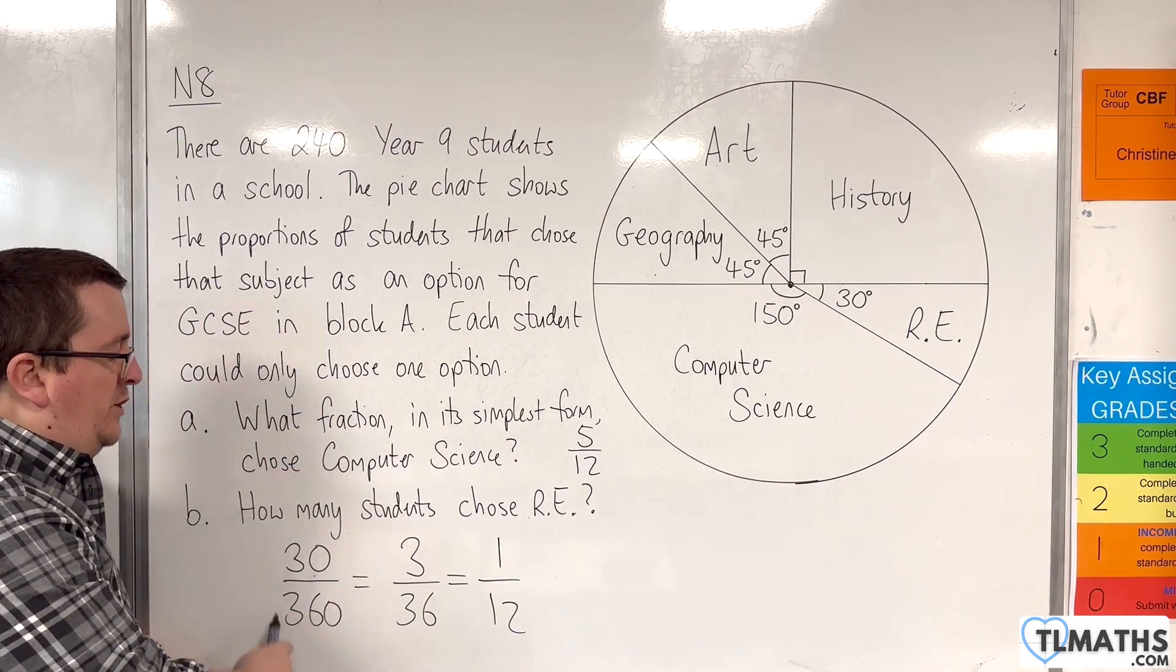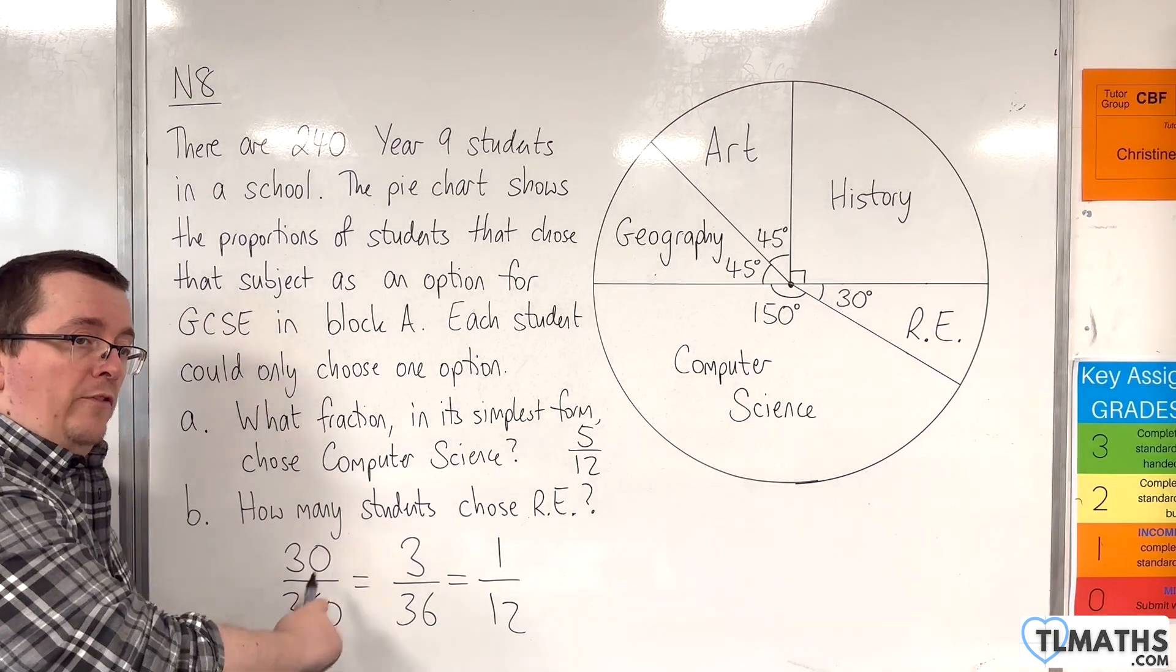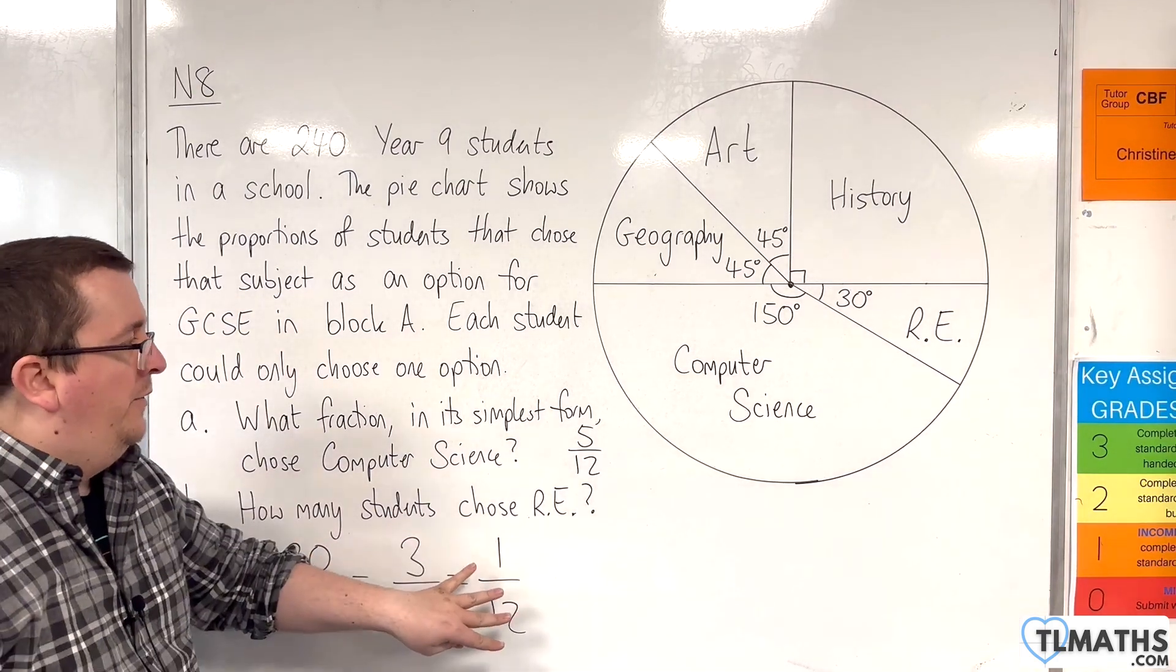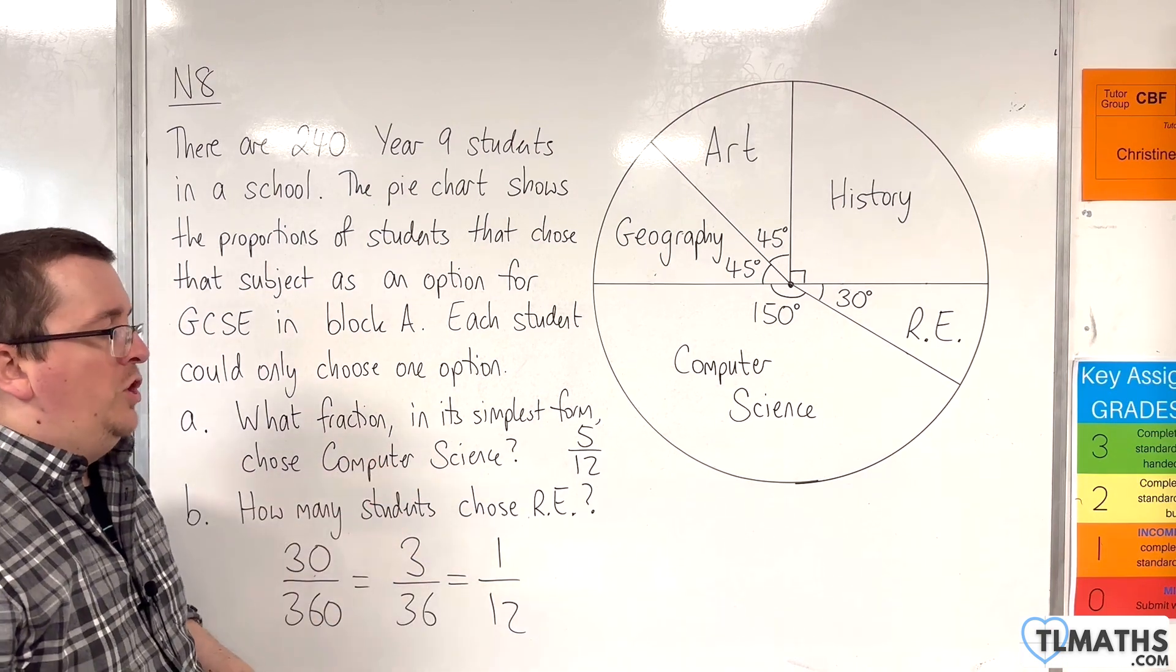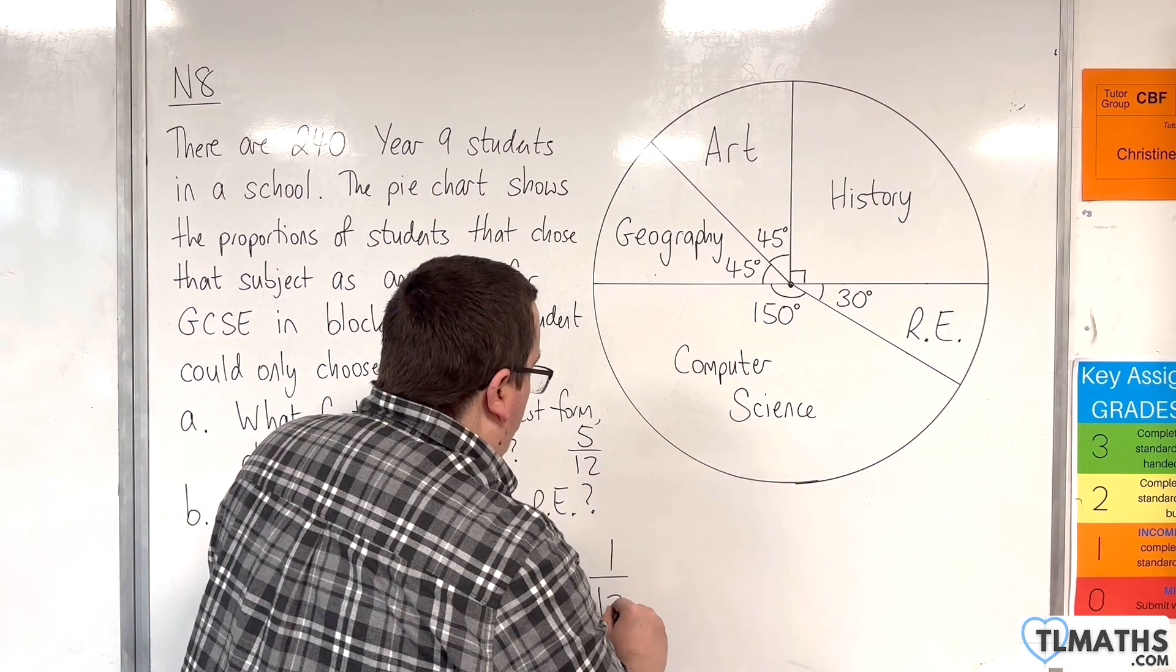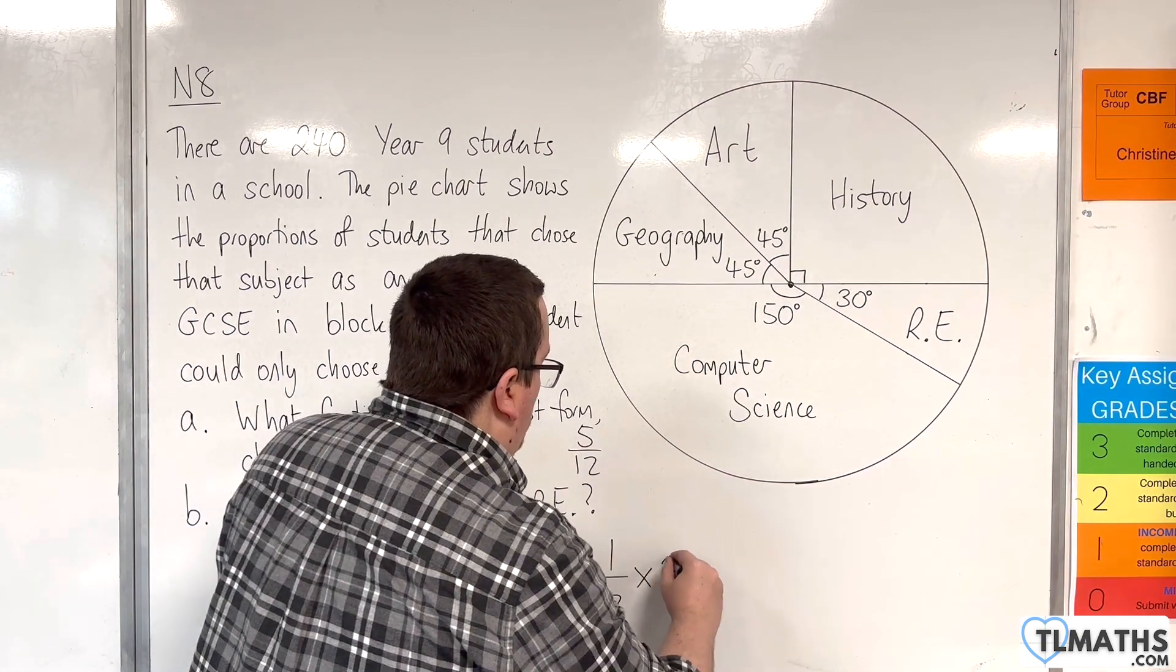You could have divided top and bottom by 30 straight off the bat, would have been fine. We know 1 twelfth of the cohort chose RE. So, we want to find 1 twelfth of 240.